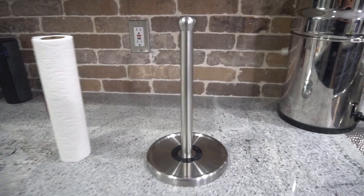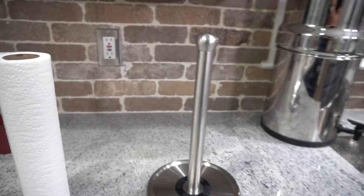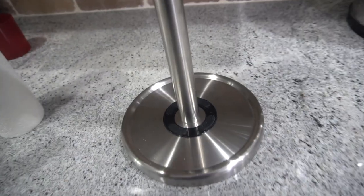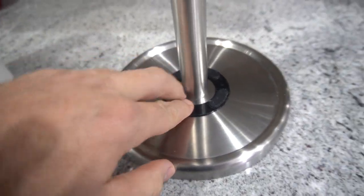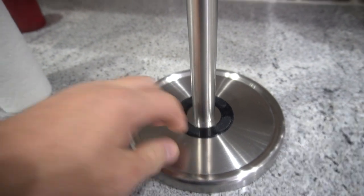The Polder stainless steel single tear paper towel holder. What I like about this, we've been using this for a while, it's got a nice good grip at the bottom, like a rubbery grip that will hold your paper towels so they won't go flying all over the place.